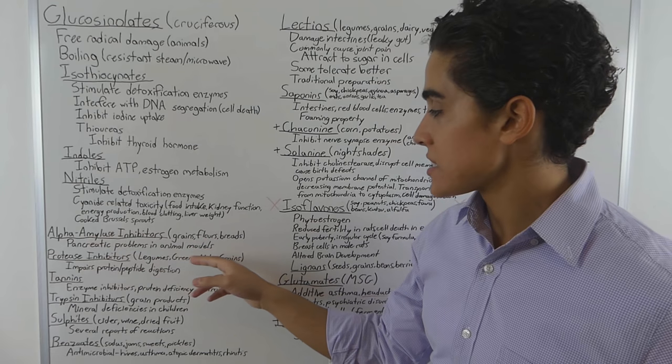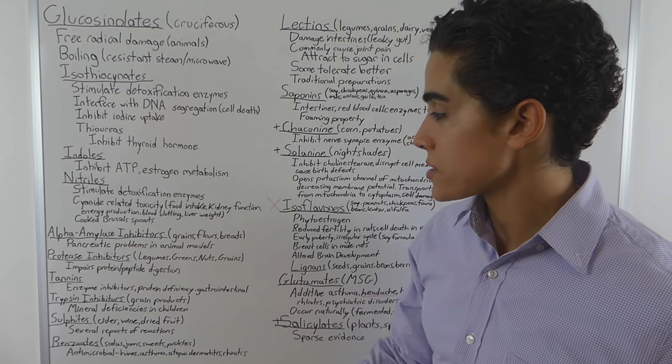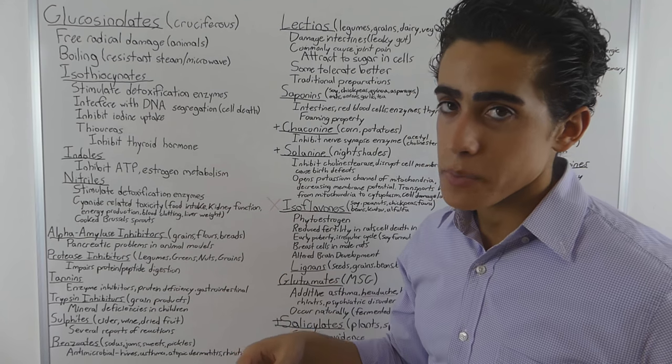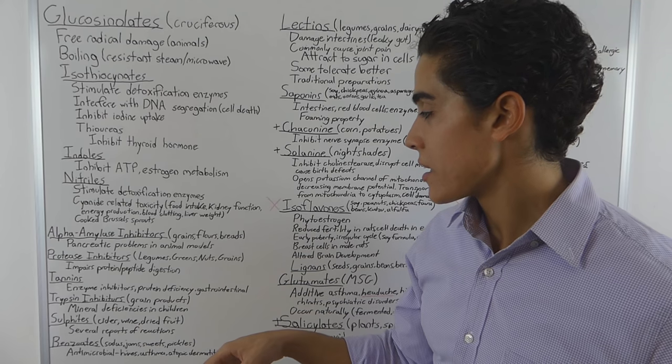So alpha amylase inhibitors are found in grains, flours, and breads. These cause pancreatic problems in animal models and could very likely be a reason that a lot of people are getting pancreatic cancer now. Just a high grain diet.